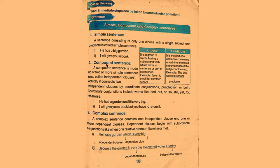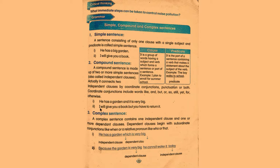Number two: compound sentences. A compound sentence is made up of two or more simple sentences, also called independent clauses. It connects two independent clauses by coordinate conjunctions, punctuation, or both. Coordinate conjunctions include words like: and, but, or, so, still, yet, for, otherwise. Example: 'He has a garden' and 'It is very big.' Another: 'I will give you a book' but 'You have to return it.'